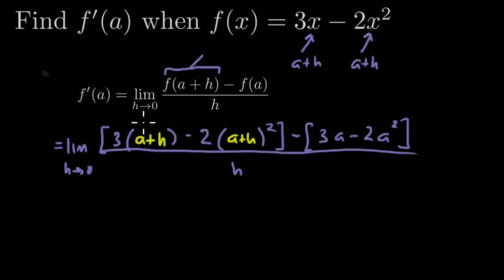So let's go ahead and start distributing things. Don't forget our limit. We're going to distribute the 3. That's going to give me 3a plus 3h. I can't distribute this 2 yet because I have to FOIL a plus h. So I've got to do a plus h squared. So let me do that right now.